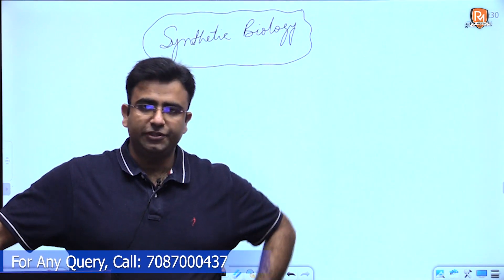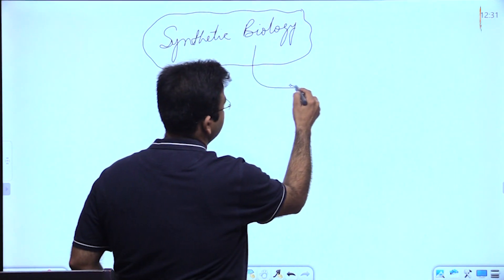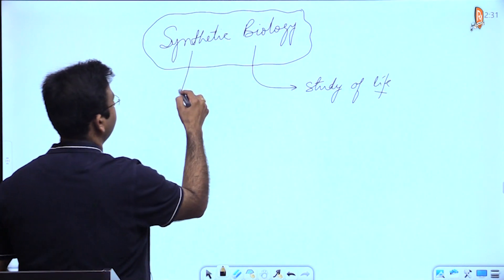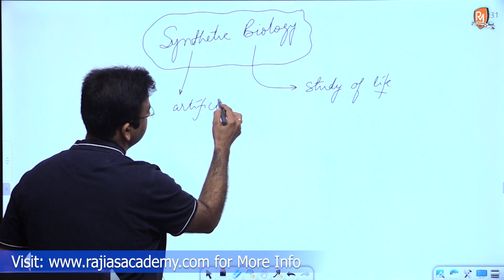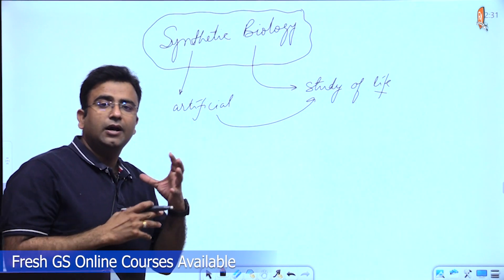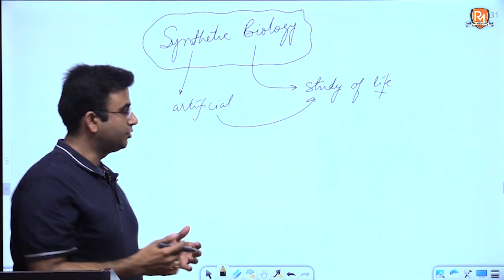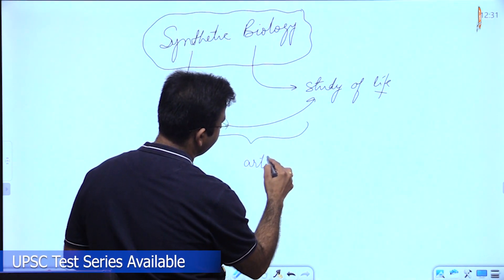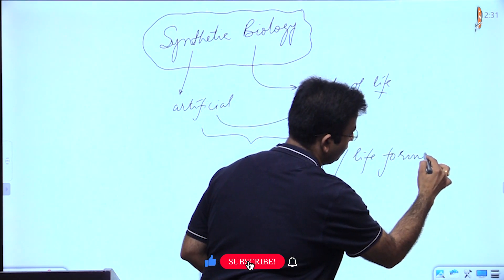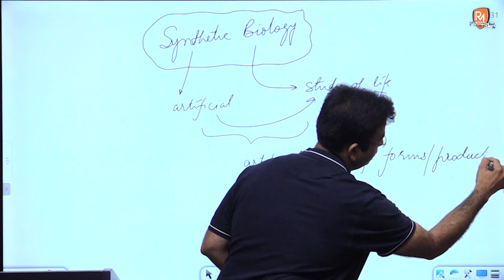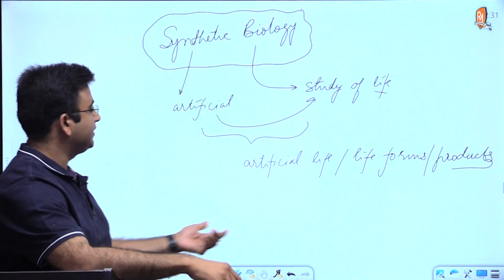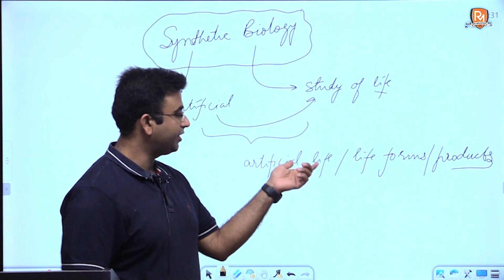Now, what is synthetic biology? The word itself says biology is the study of life and synthetic means artificial. However, synthetic biology does not mean that it is the artificial study of life. Rather, it is a methodology, an approach to create artificial life, life forms, or products related to life artificially.